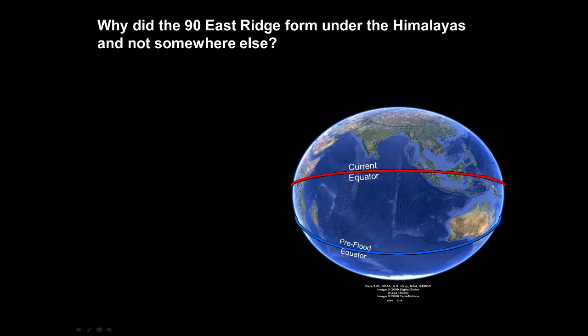While teaching on the origin of the 90 East Ridge, I was asked why is it that the ridge is located right under the Himalayas and not somewhere else? Why didn't it rip over to the side along the mid-oceanic ridge near Africa, or out in the fractured western Pacific? It was a good question that made me realize the need to add more detail to visually explain and answer this question.